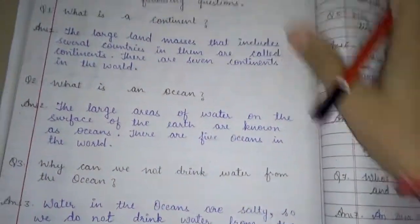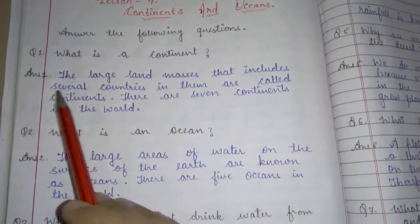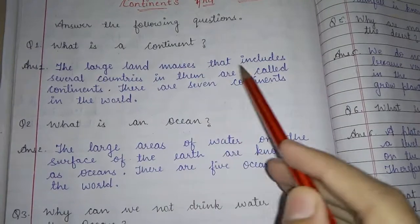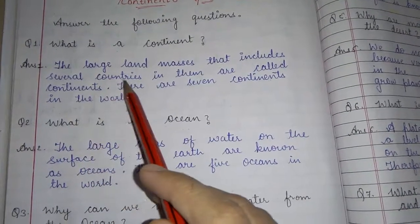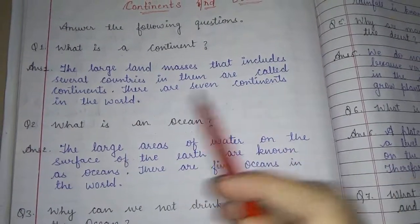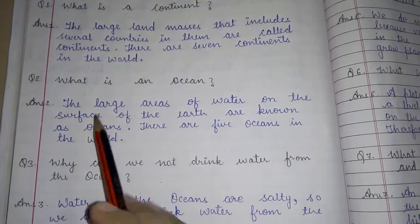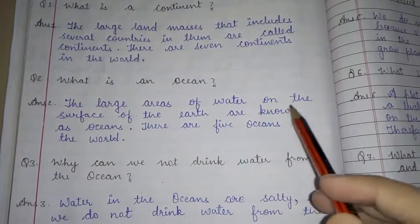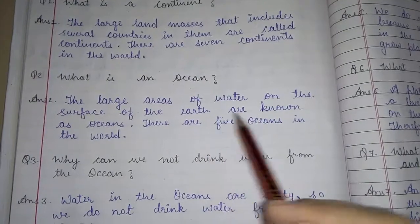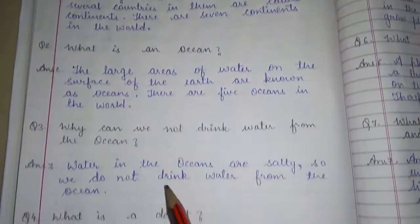Now answer the following questions. First question: what is a continent? Answer: the large landmass that includes several countries in them are called continents. There are seven continents in the world. Second, what is an ocean? Answer: the large area of water on the surface of the earth are known as oceans. There are five oceans in the world.